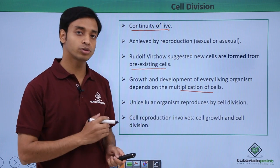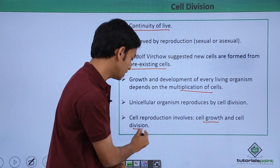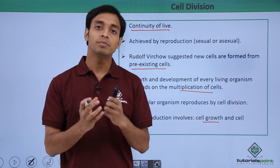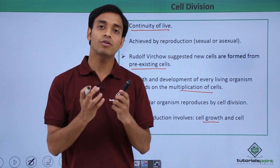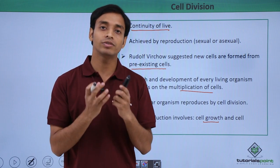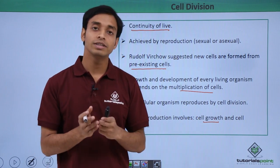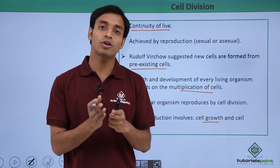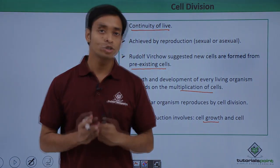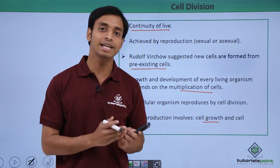Cell reproduction involves two major processes: the first is cell growth and the second is cell division. Cell growth involves the multiplication of cell organelles or the increase in the content of the cell. Cell division involves the formation of new daughter cells from the parent cell.